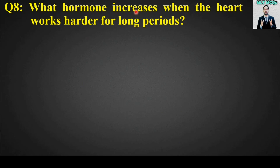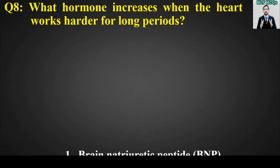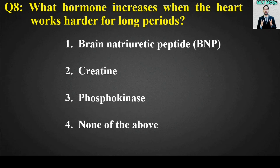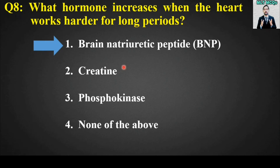MCQ number eight: What hormone increases when the heart works harder for long periods? Options are: brain natriuretic peptide (BNP); creatinine phosphokinase; none of the above. The right answer is option number one — brain natriuretic peptide (BNP) is the hormone which increases when the heart works harder for long periods.